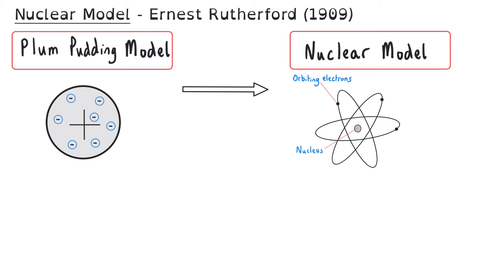The results of the alpha particle experiment led to Ernest Rutherford proposing the nuclear model in 1909. This was widely accepted because it gave a much better explanation for the evidence of the alpha particle scattering experiment than the plum pudding model.